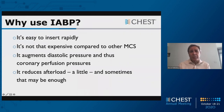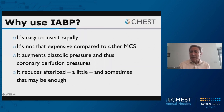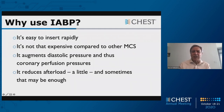So why use intra-aortic balloon pumping if the data don't support it? It's easy to insert rapidly. It's not that expensive compared to other mechanical circulatory support devices — runs about $500 to $600. It augments diastolic pressure and thus coronary perfusion pressure, so if your problem is myocardial ischemia, it may well be beneficial. If your problem is cardiac output, remember output only goes up by half a liter — maybe you need something else. And it does reduce afterload a little, and sometimes that little reduction may be enough.